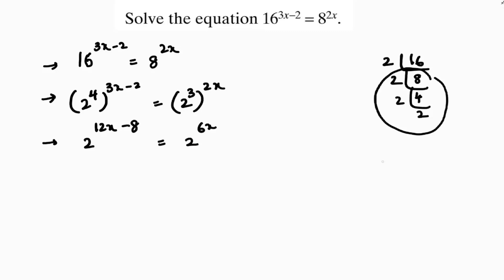Now because here see I am using the identity a power m whole power n, laws of exponents a power m into n. Now bases are equal. Bases are equal. So I will equate the powers. So 12x minus 8 equals 6x.